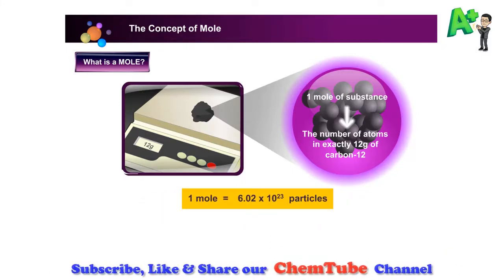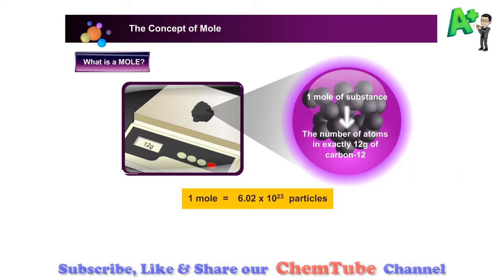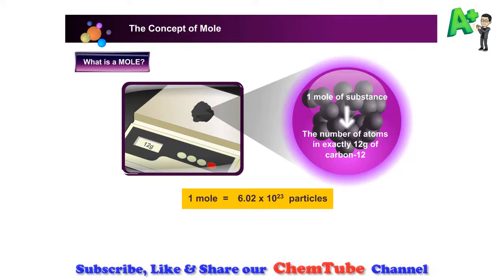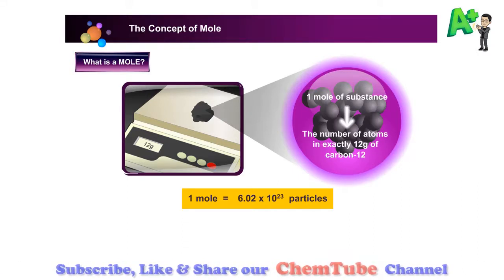Therefore, a mole is the amount of a substance that contains 6.02 times 10 to the power of 23, that is the Avogadro's number of particles. They can be 6.02 times 10 to the power of 23 atoms, molecules, or ions.